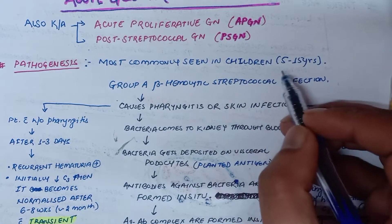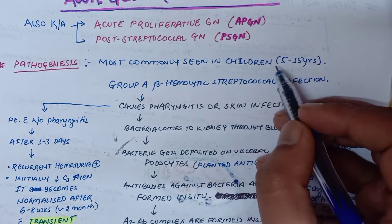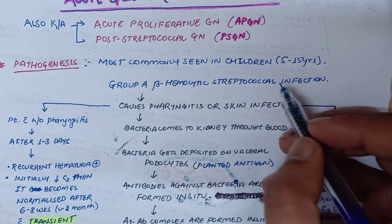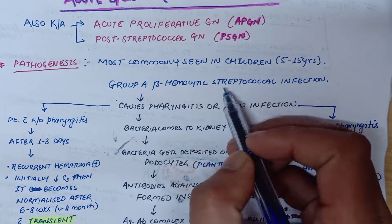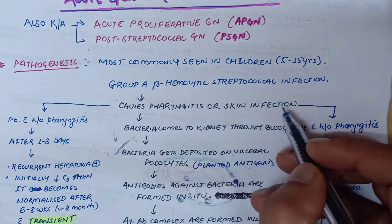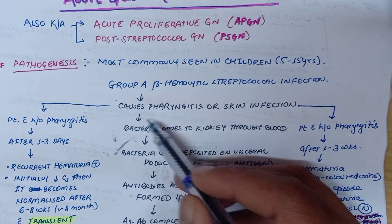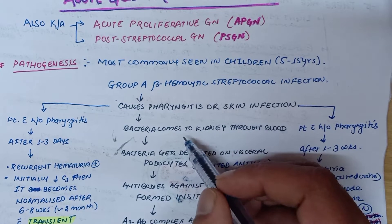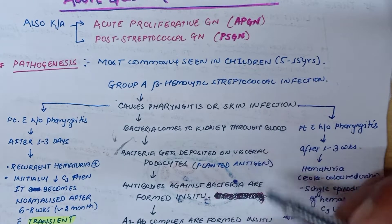children of age 5 to 15 years, and the most common organism is group A beta-hemolytic streptococcal bacteria. Group A beta-hemolytic streptococcal infection can cause pharyngitis or skin infections like impetigo. Bacteria from these infections can enter into the bloodstream and come to the kidney through the blood.